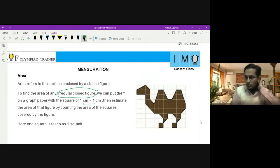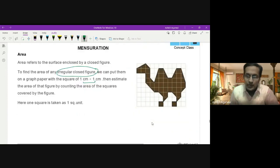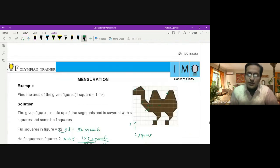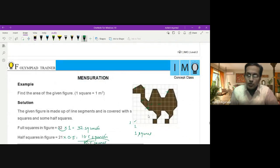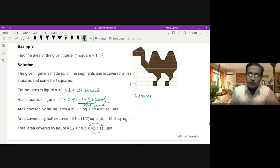We suppose that the area of each square which I have taken here is one square unit, right? So we count number of full squares, number of half squares. And if we try to count out the number of full squares in this figure, it will be 32, and the number of half squares will be 21.